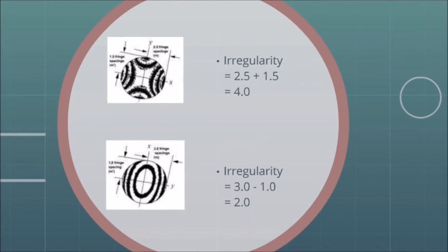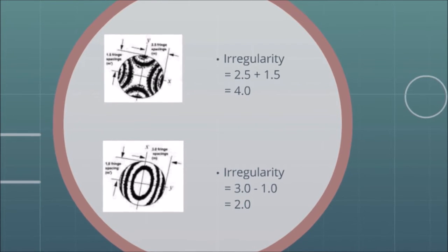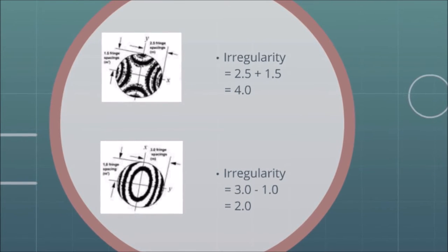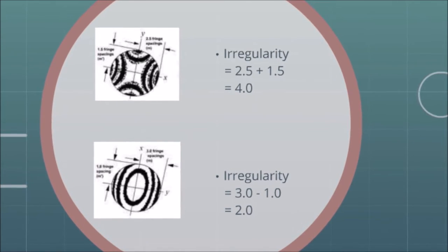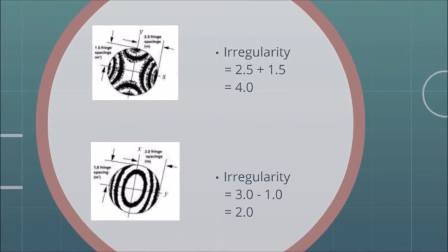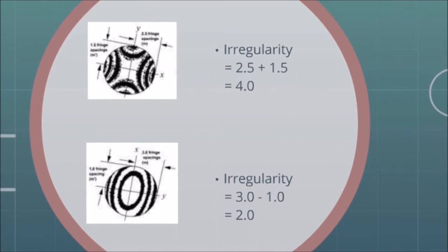Let's observe the first figure. As we can see, the bending direction of fringes in x and y direction is different. So here, the irregularity is the sum of the number of fringes in x and y direction. But in the second figure, the bending direction is the same this time. So here, the irregularity is the difference of their fringe number in x and y direction, respectively.